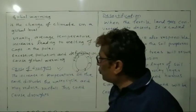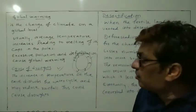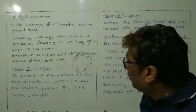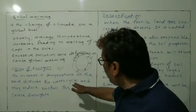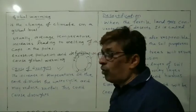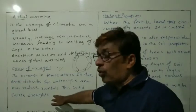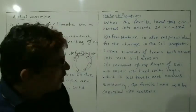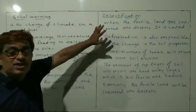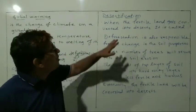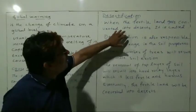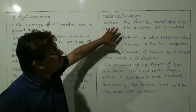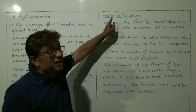The next topic is the cause of droughts. Why do droughts occur? The increase in the temperature of the Earth disturbs the water cycle and may reduce rainfall. This reduced rainfall causes droughts. When the fertile land gets converted into deserts, this is called desertification.